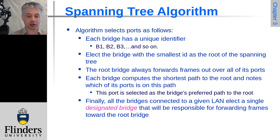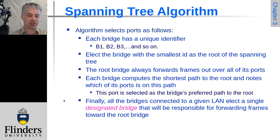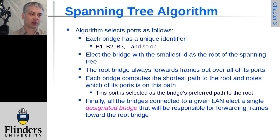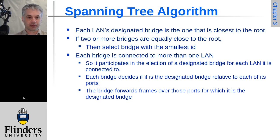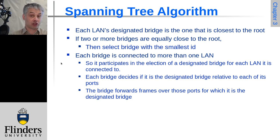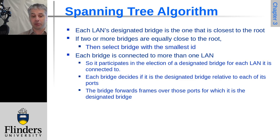Apologies if the Australian pronunciation of 'route' versus 'root' is a little confusing. The final step is that all bridges connected to a LAN elect amongst themselves a single designated bridge responsible for forwarding frames toward the root bridge, effectively de-duplicating the links back to the root. Each bridge chooses the shortest route, meaning every path back to the root is the most efficient available. If two paths are equally close, the tie is broken by choosing the bridge with the smallest ID, making this a deterministic algorithm.